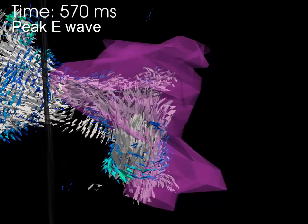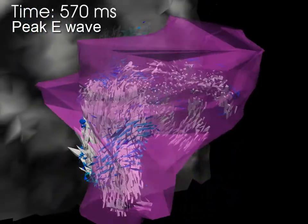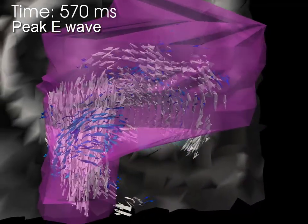Note the flow corkscrewing into the ventricle, although there is very little vorticity in the center of this flow.